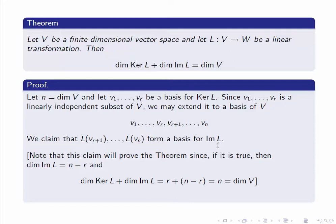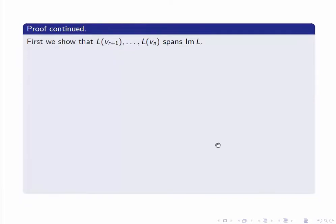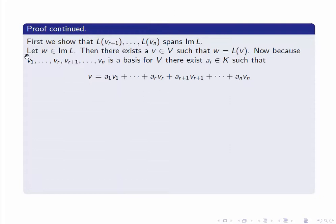There are two things to prove whenever we want to show that something is a basis: firstly that it spans the set, and secondly that it's linearly independent. So let's start with the spanning claim. We need to show that any element in the image can be expressed as a linear combination of these elements. Let's start with an arbitrary element in the image.